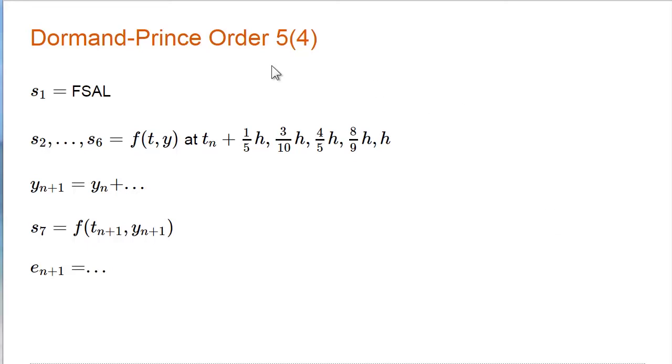The basic method is order 5. The error correction uses a companion order 4 method. The first slope at t_n is first same as last, left over from the previous successful step. Then there are five more slopes from function values at a fifth h, three tenths h, four fifths h, eight ninths h, and then at t_n plus 1.